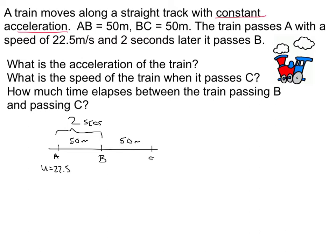So let's make a SUVAT and start filling things in. The thing about this one is that we could be doing a SUVAT from A to B, or A to C, or B to C. I'm going to do A to B because I've got the most information about that.